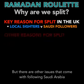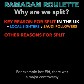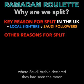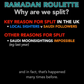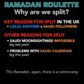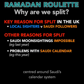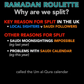But there are other issues that come with following Saudi Arabia. For example, last Eid there was a major controversy where Saudi Arabia declared that they had seen the moon, but astronomers said that this was scientifically impossible. And in fact, that's happened many times before. This Ramadan, again, there is a controversy centred around Saudi's calendar system called the Ummul Qura calendar, and this is what we will explore in this video.